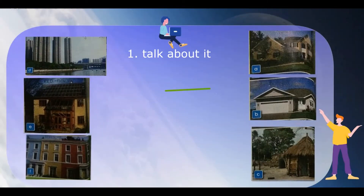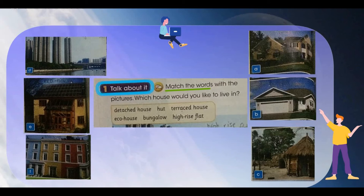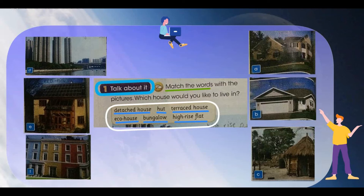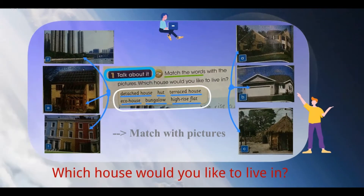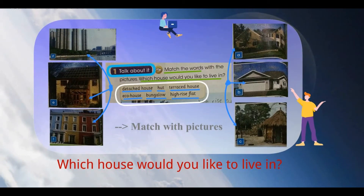Under title number 1, Talk About It, we can read the names of different houses. These are the names of different houses. Now, what you have to do is: first of all, you have to match the words with the pictures, and secondly, you have to tell us which house you would like to live in.